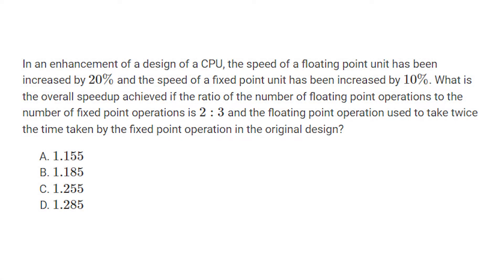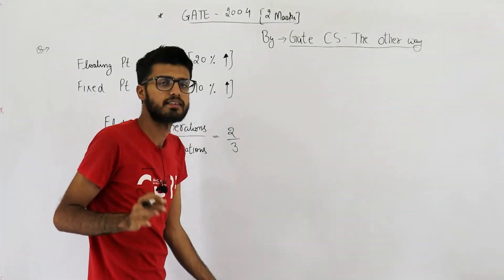It's just a question from percentages. The statement is: in an enhancement of a design of a CPU, the speed of a floating point unit has been increased by 20 percent and the speed of the fixed point unit has been increased by 10 percent. What is the overall speed-up achieved if the ratio of number of floating point operations to fixed point operations is 2:3, and floating point operations used to take twice the time taken by fixed point operations in the original design?